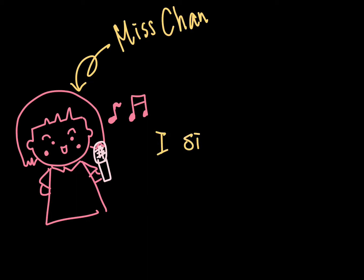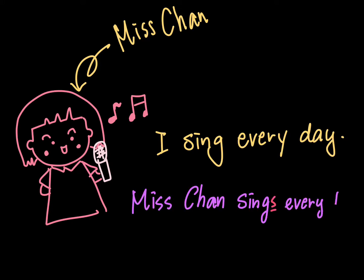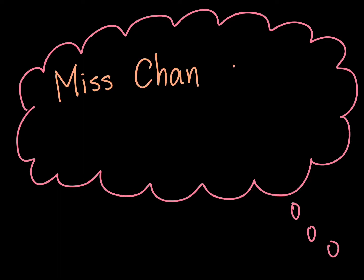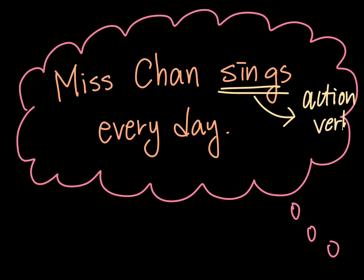So I'm going to tell you something: I sing every day. If you're going to tell someone about this, you'll probably say 'Miss Chen sings every day.' Take a look at the sentence again: 'Miss Chen sings every day.' The first thing you should notice is that 'sing' is actually the action verb in this sentence. Action verb means the thing someone does.